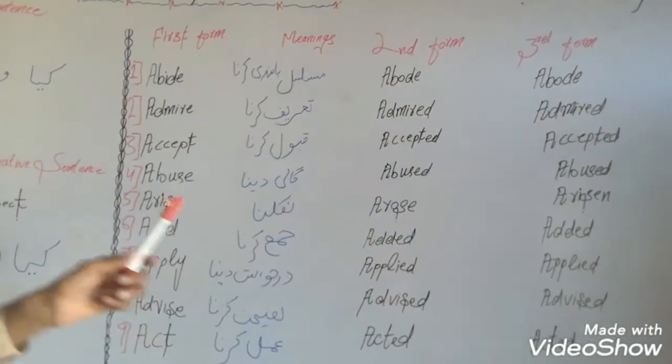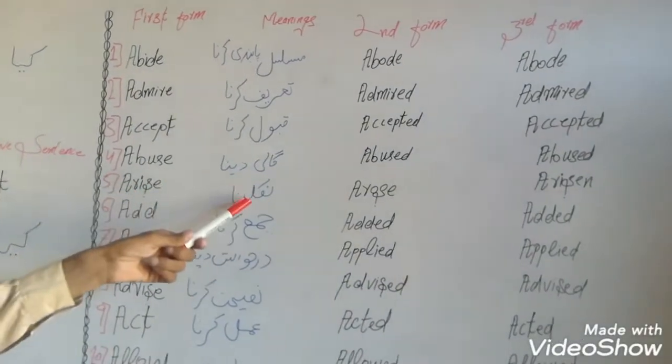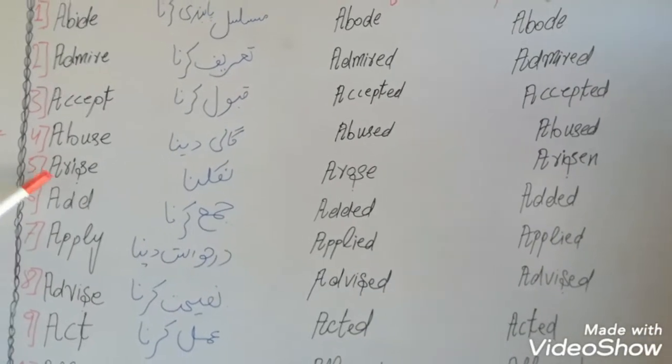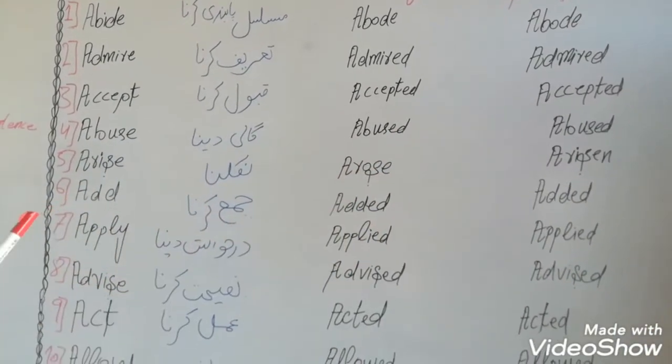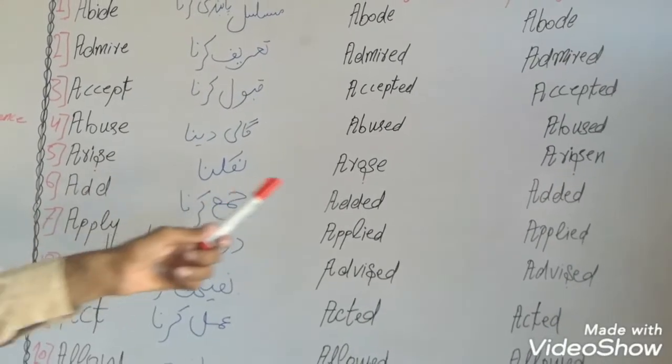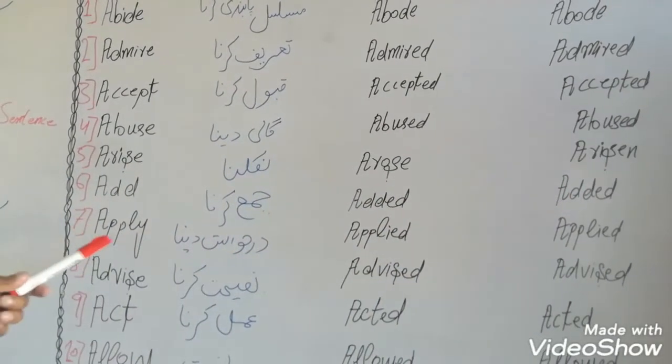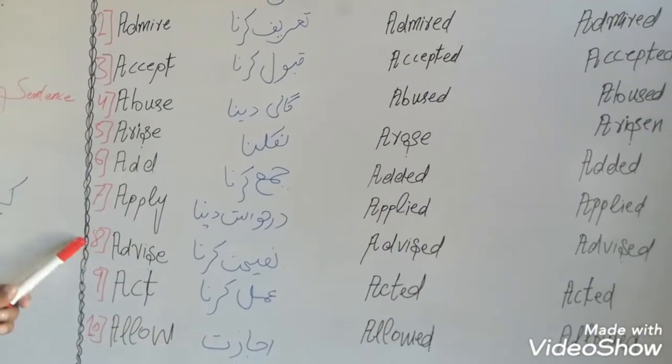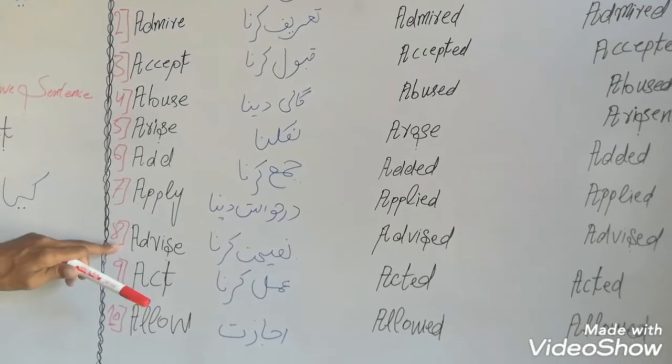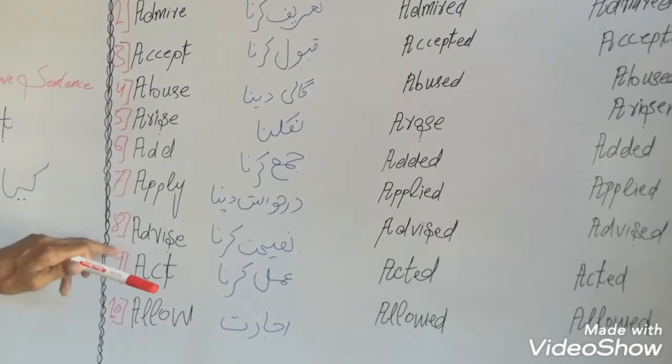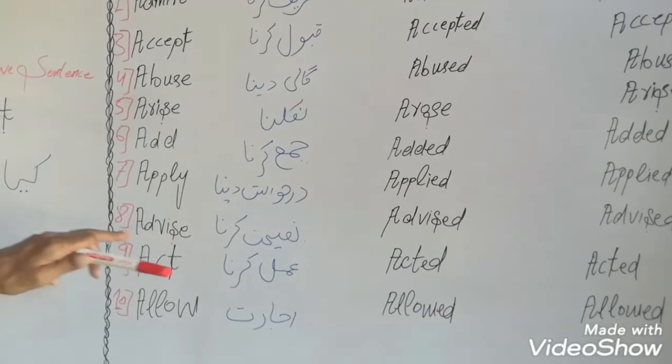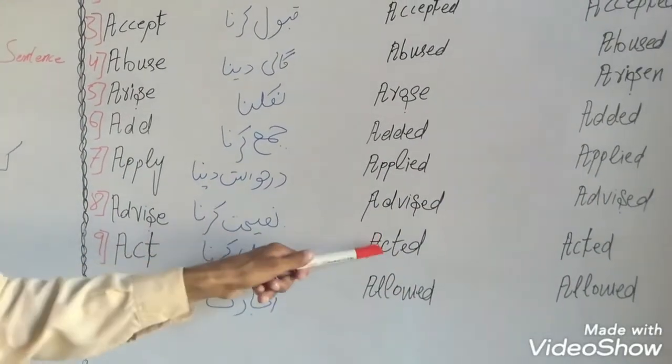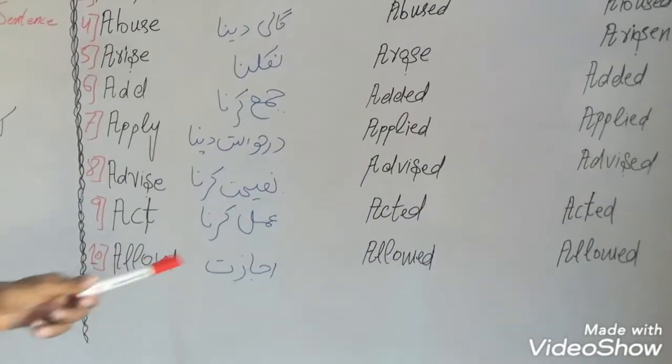'Abuse', 'arise' - forms 'arose' and 'arisen'. 'Advise' - forms 'advised' and 'advised'. 'Act', 'allow' - meaning permission - forms 'allowed' and 'allowed'.